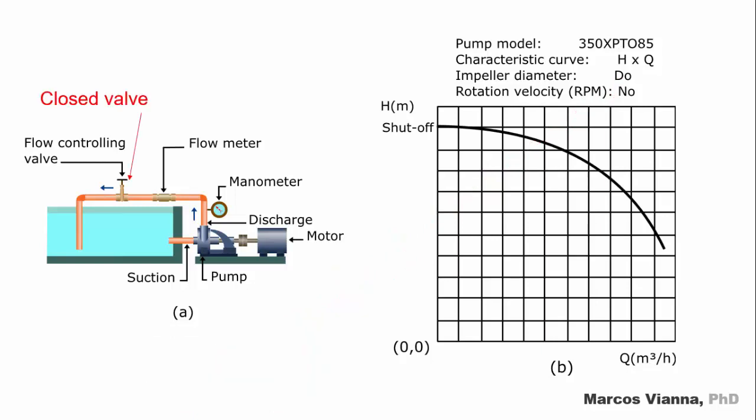Let us start the test with the flow controlling valve completely closed. The flow in the system will be zero and the pressure indicated at the discharge of the pump will be maximum. We call it shutoff pressure.